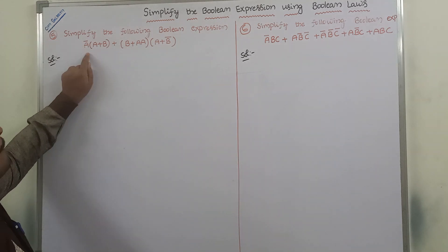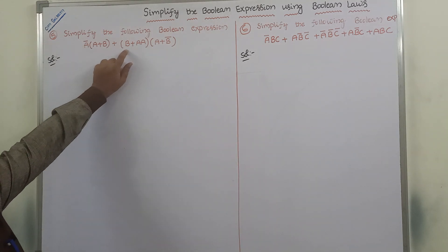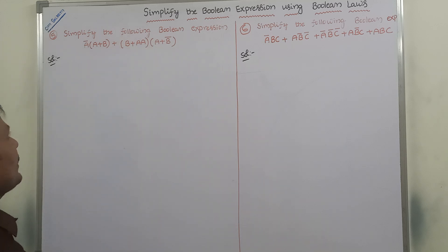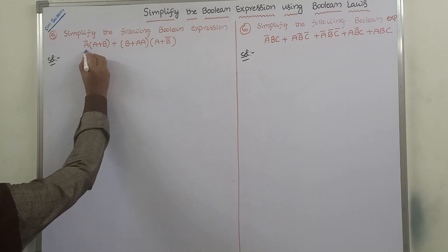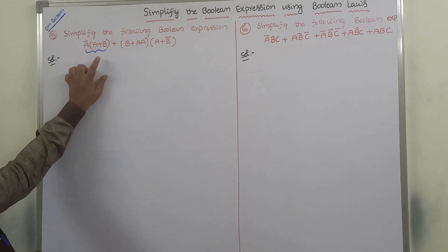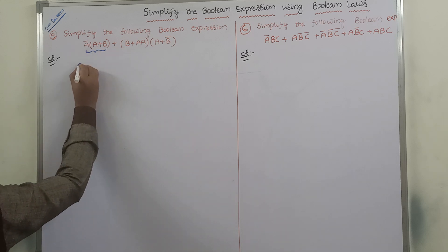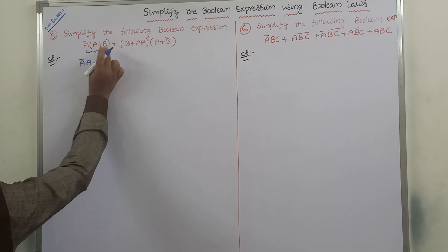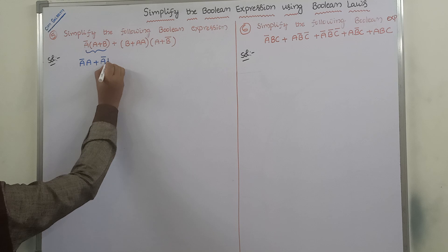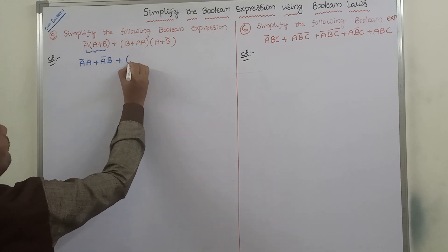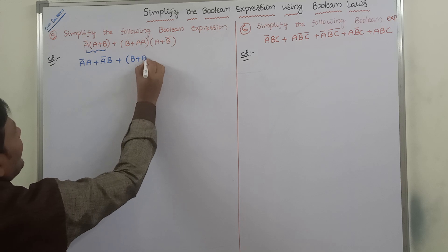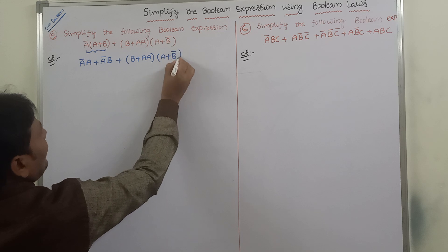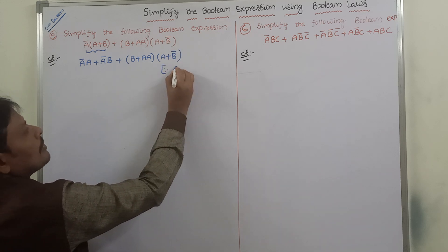The first expression is: A-bar into (A plus B) plus (B plus A) into A into (A plus B-bar). First we observe this expression. We apply the distributive law here. So A-bar into (A plus B) gives us A-bar·A plus A-bar·B, that is A-bar·B, plus B plus A into A into (A plus B-bar).